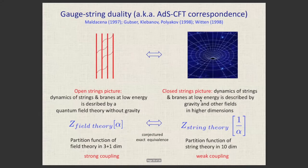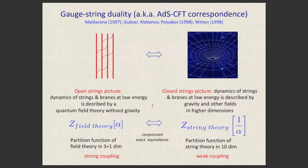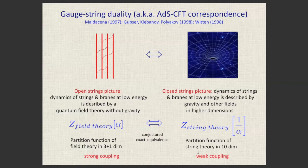What is fundamentally important is that when one description is strongly coupled — where perturbation theory fails — the other description is weakly coupled, where calculations are straightforward. Knowing the dictionary, you can map the strongly coupled system to the weakly coupled one and calculate any quantity you need. This is the wonderful holographic correspondence. In particular, black holes are dual to non-gravitational degrees of freedom.